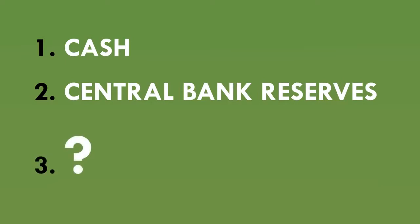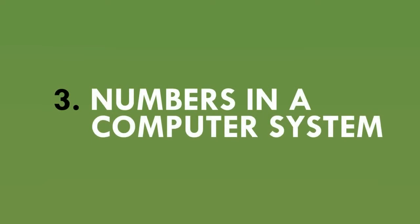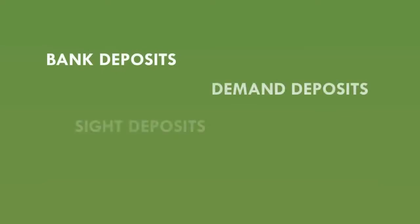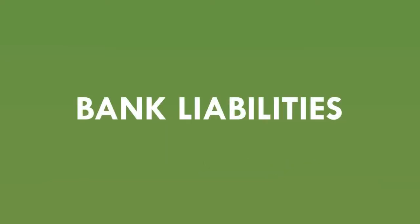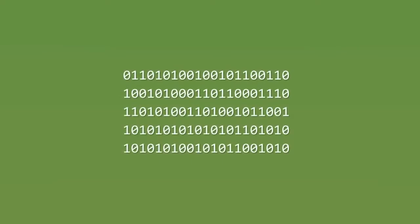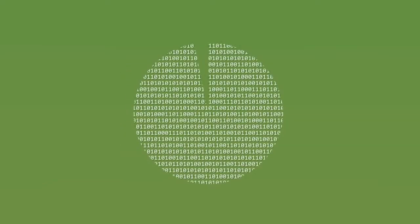The third type of money is not created by the Bank of England, the Royal Mint, or any other part of government. This third type is the money that's in your bank account right now — just numbers in a computer system. Bankers and economists refer to it as bank deposits, demand deposits, sight deposits, or bank credit. These terms all mean the same thing. They might also be referred to as bank liabilities — an accounting term, because this money is a liability of the bank to you, i.e. what the bank needs to repay you. This type of electronic bank deposit money now makes up over 97% of all the money used in the UK economy, with less than 3% being cash created by the government. All this electronic bank money is created by banks.